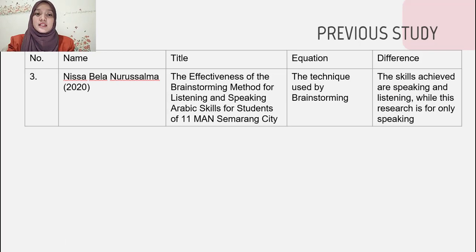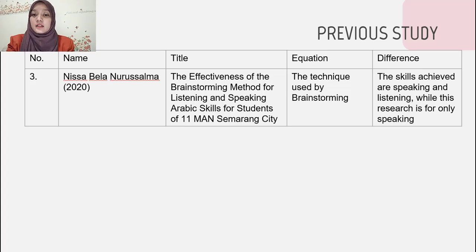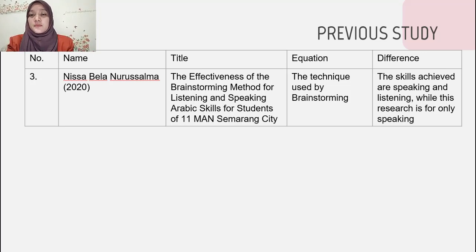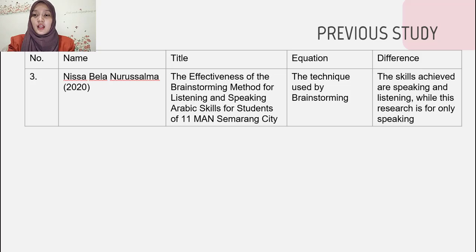The last previous study is from Nisa Belanurus Salmer (2020). The title is 'The Effectiveness of the Brainstorming Method for Listening and Speaking Arabic Skills for Students of Grade 11 at SMA Semarang City.' The similarity is the technique used — brainstorming — and the difference is that this research covers only speaking, not both speaking and listening.